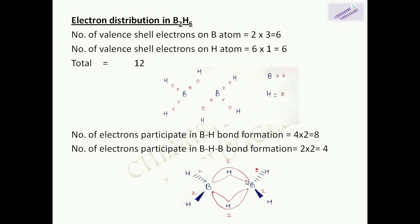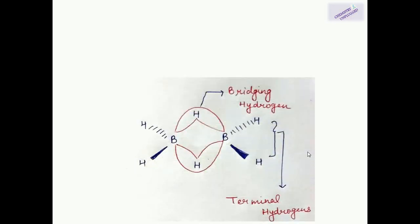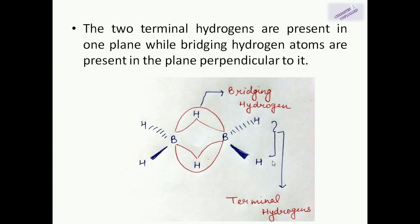All twelve valence electrons are used up in BH and BHB bond formation. There are two types of hydrogens in B₂H₆: terminal hydrogens, which participate in BH bond formation and lie in one plane, and bridging hydrogen atoms, which participate in BHB bond formation and are present in a plane perpendicular to the terminal BH bonds.